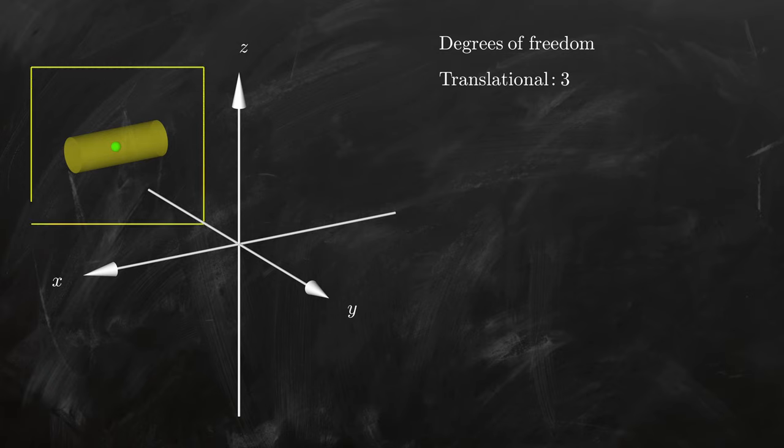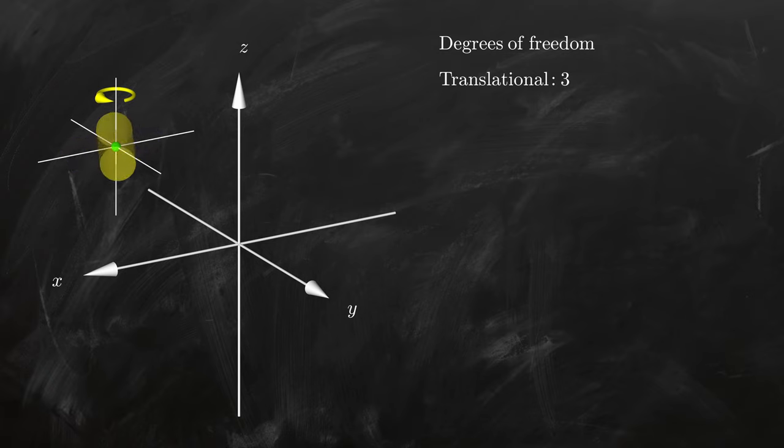I find that it helps to imagine a second set of axes attached to the cylinder with respect to which we measure rotations. There are then three ways in which the cylinder can be rotated about these axes. Any arbitrary rotation can then be described in terms of these three basic rotations, and we say that a rigid body has three rotational degrees of freedom.